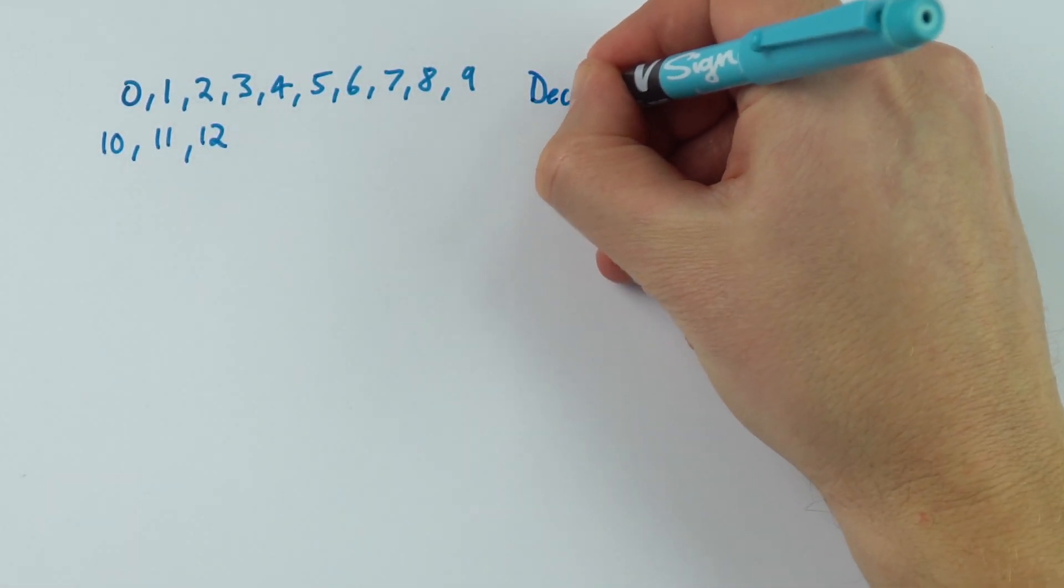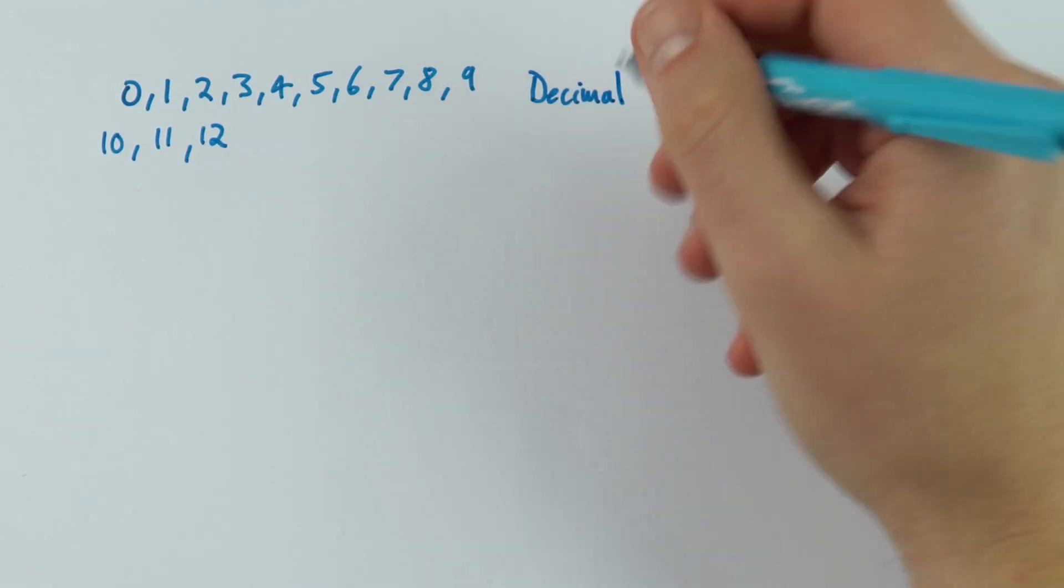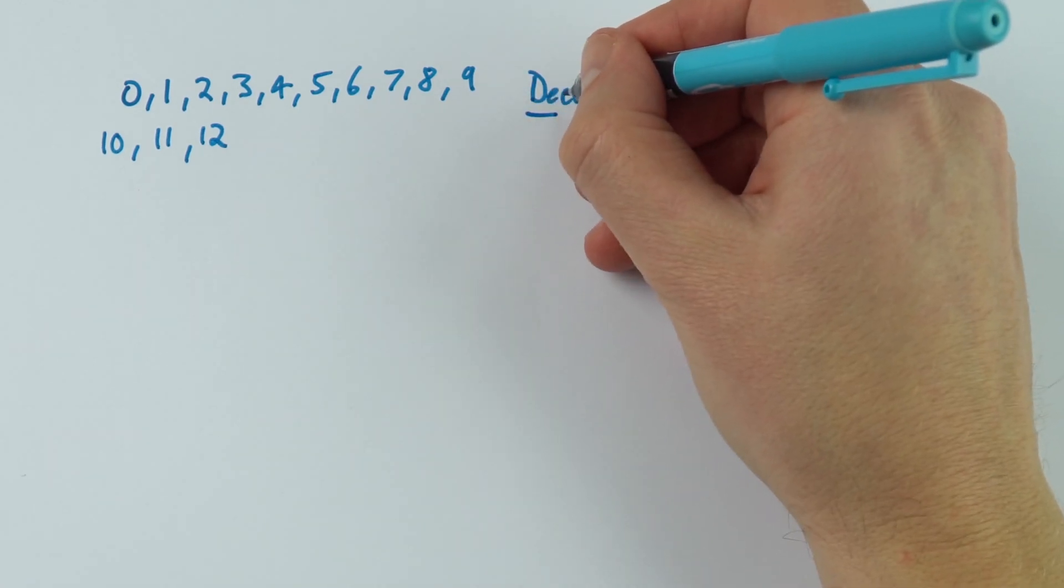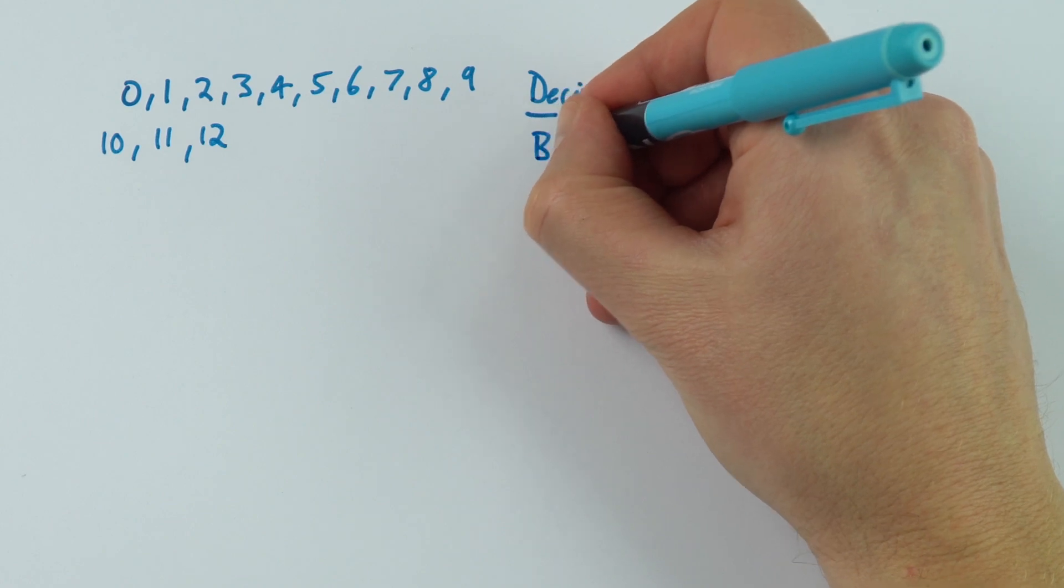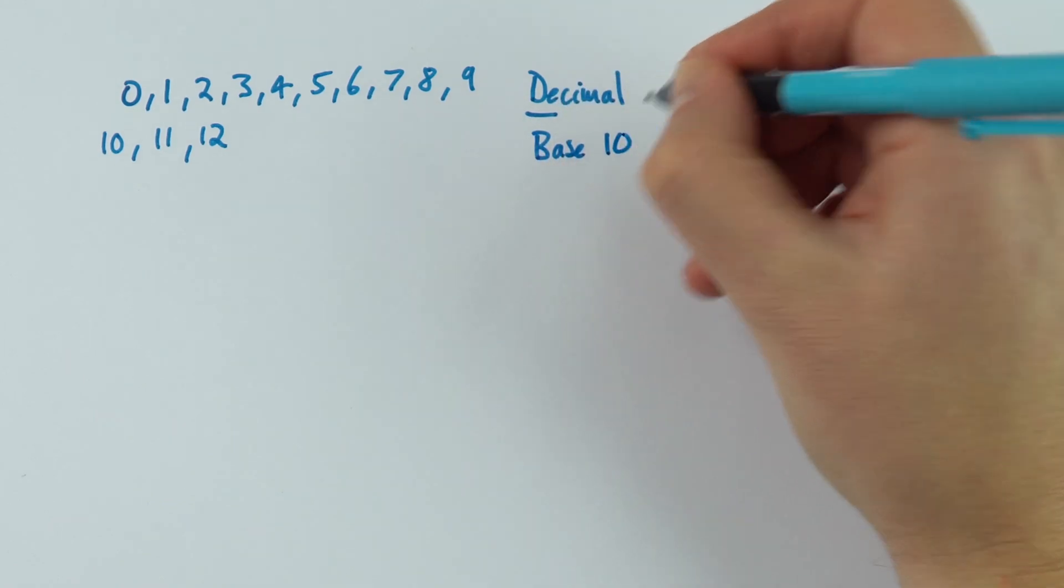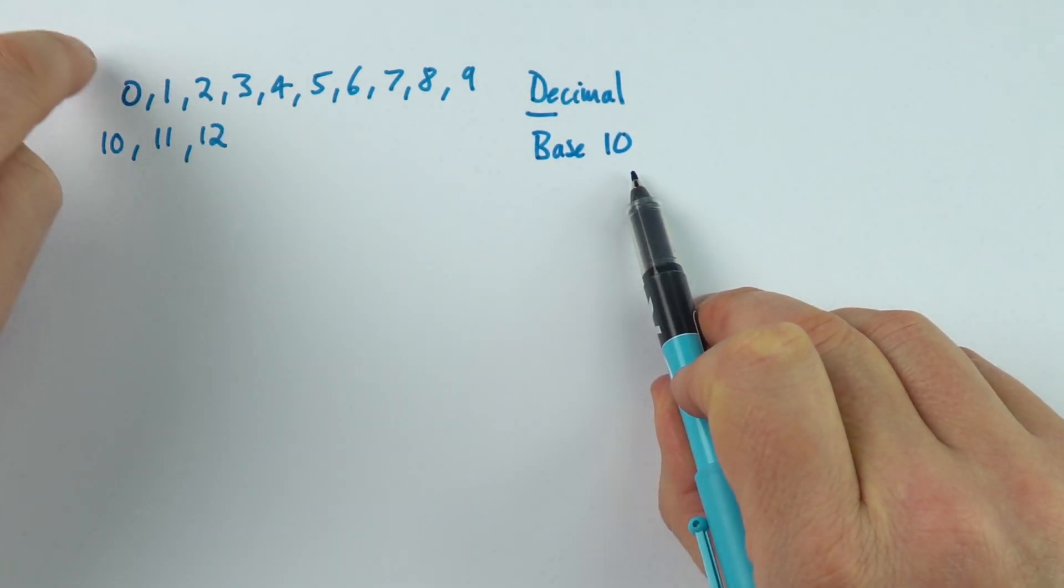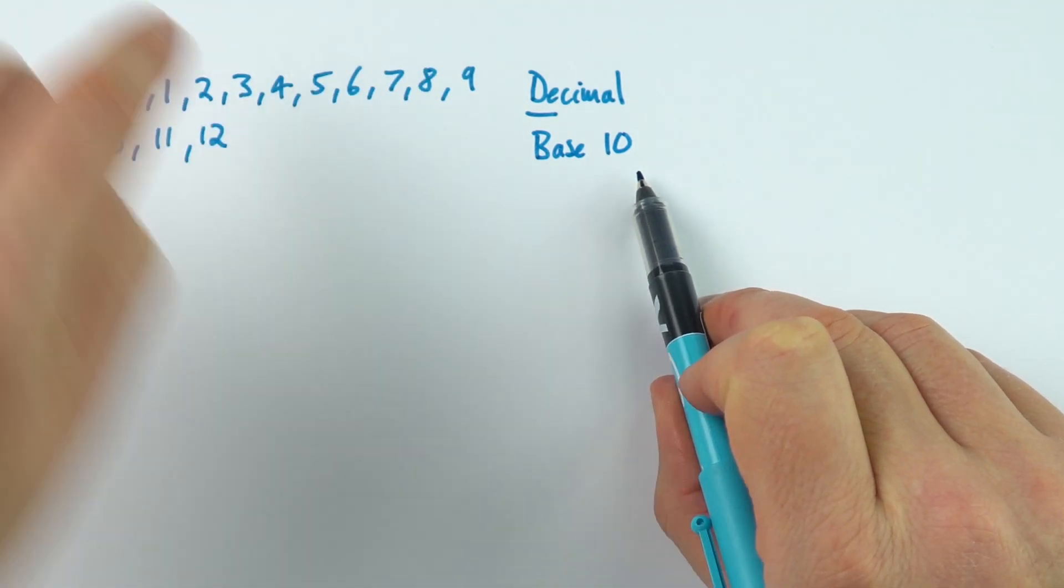And this is our decimal system. The deci part of this word means that we're looking at something to the base 10. Base 10 means we've got 10 different digits that we can use.